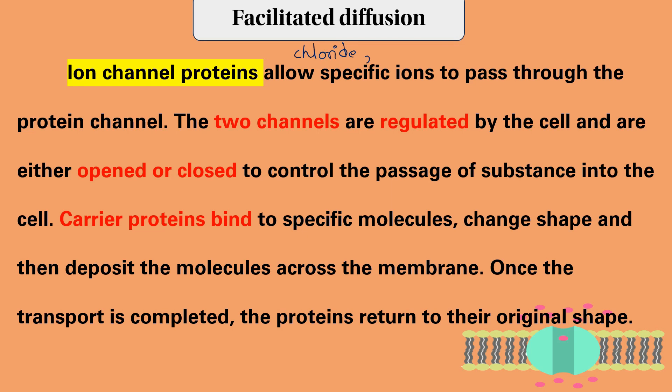When you apply a signal, the potassium ion will pass through the protein channel. The ion channel is a type of transport protein, and the hydrophilic pore is used for passage. These channels are regulated by the cell and are either open or closed to control the passage of substances into the cell.